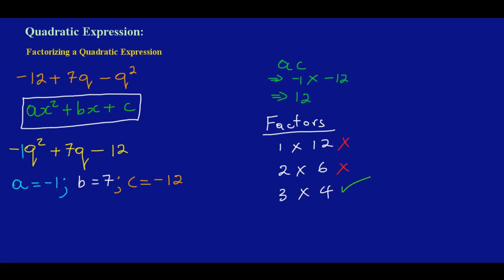So I can now rewrite my original here by saying I have -q² and then I'm going to replace 7q with my factors, +3q + 4q, and that's -12 which is my constant. Just let me get this up a little bit so we can have a little space here.